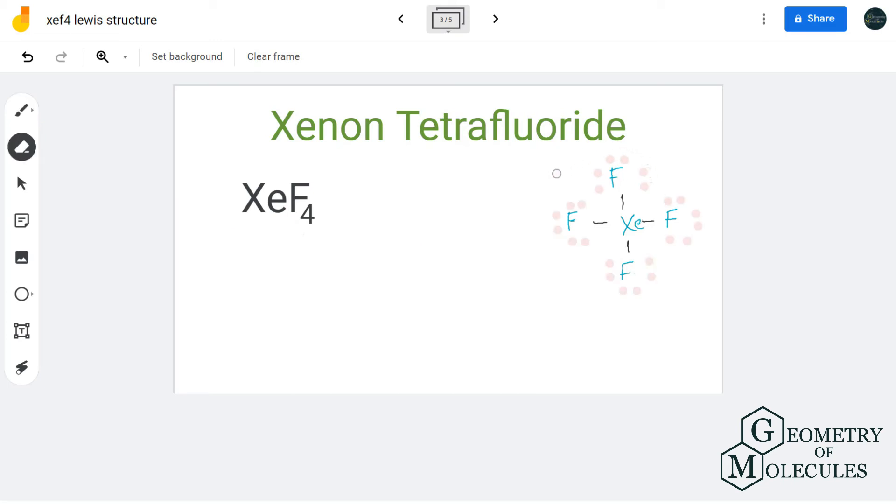As you can see, we are left with 4 valence electrons and all the orbitals of fluorine are full. We'll place these two lone pairs of electrons, or non-bonding pairs of electrons, on xenon as it can accommodate more than 8 electrons.